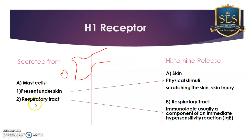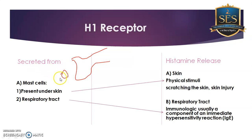Because of respiratory tract allergy, the person suffers from multiple episodes of sneezing and coughing. So if we want to block this allergic effect, we have to block the binding of histamine. This histamine is released from mast cells and binds with the H1 receptor.